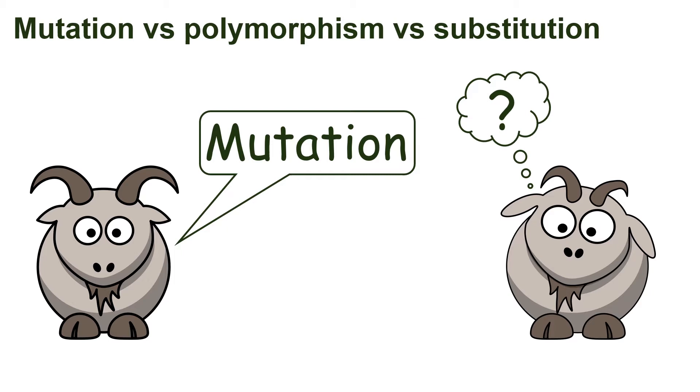To see why this is, we first need to define and distinguish between three different important terms: mutation, polymorphism, and substitution.